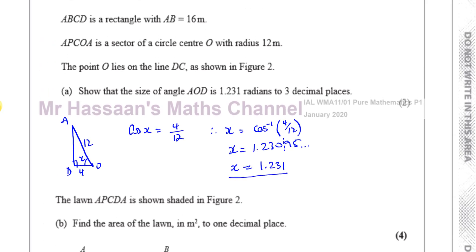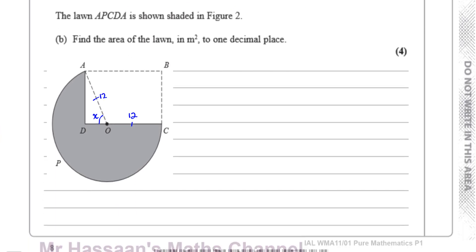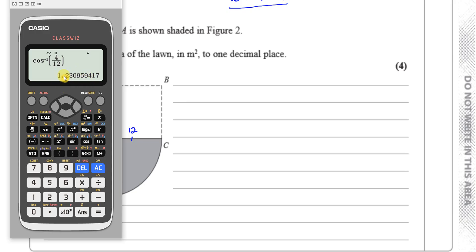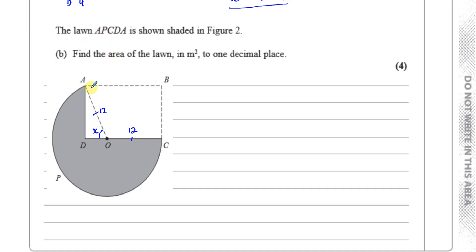Part B says the lawn APCDA is shaded in figure two — find the area of the lawn in metres squared. Before continuing, I'm going to store this angle in the calculator so I can use the exact value. I'll press store and A. Now, the lawn shape is not the full sector of a circle — it's part of the sector with a triangle missing.